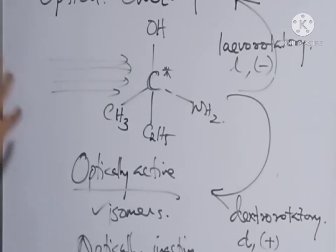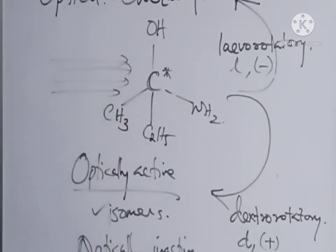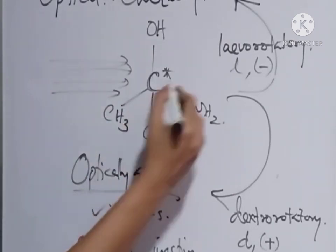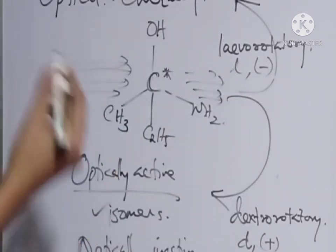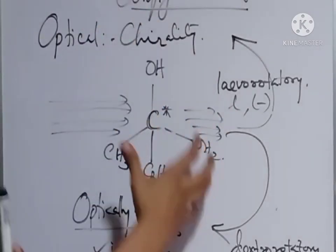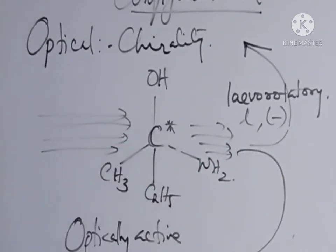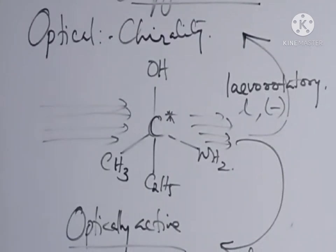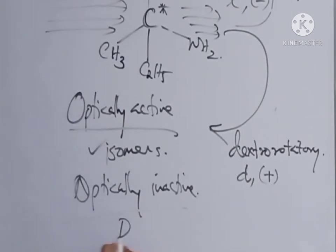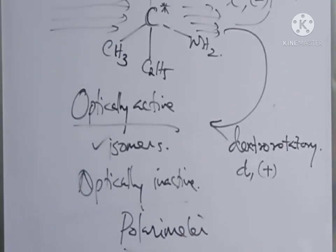If the molecule does not rotate the plane polarized light — that is, the light travels in a straight direction without any directional change — then that molecule is categorized as optically inactive. The instrument used to measure the angle of rotation is known as a polarimeter.